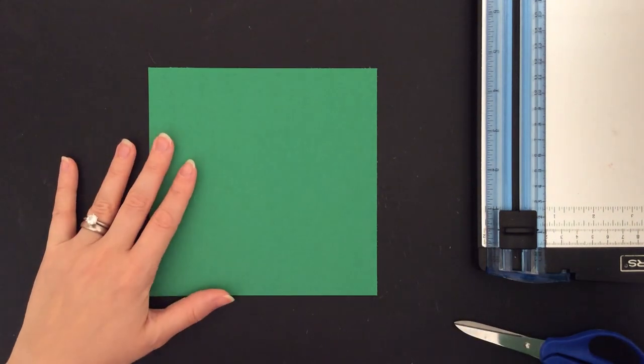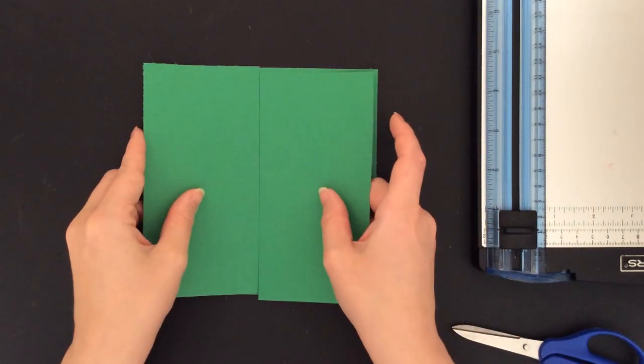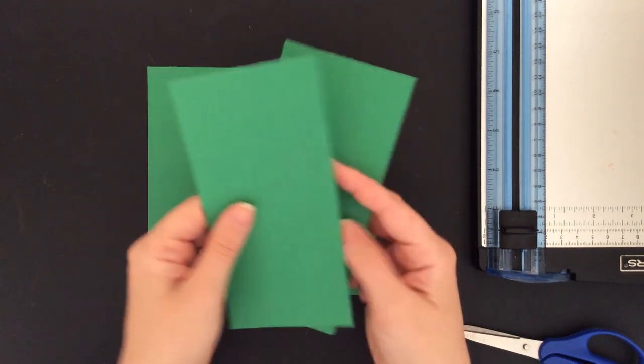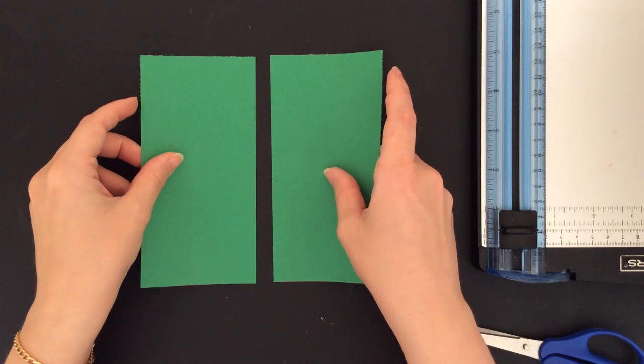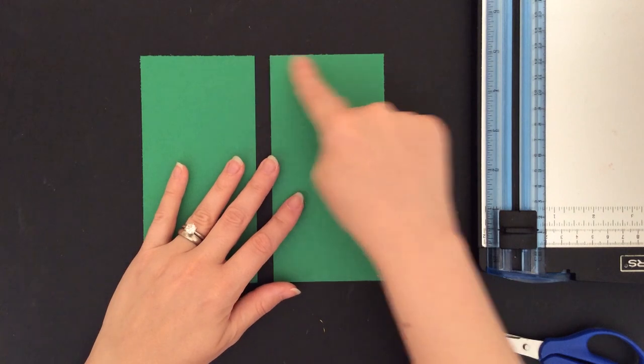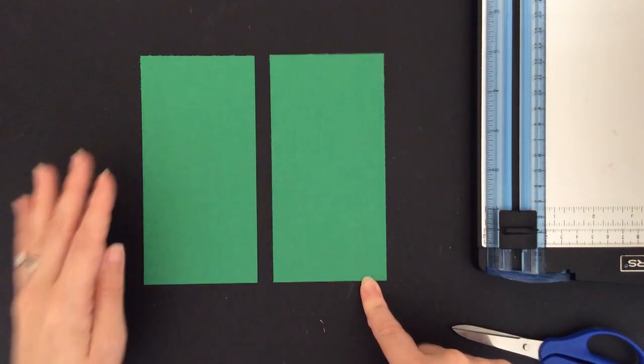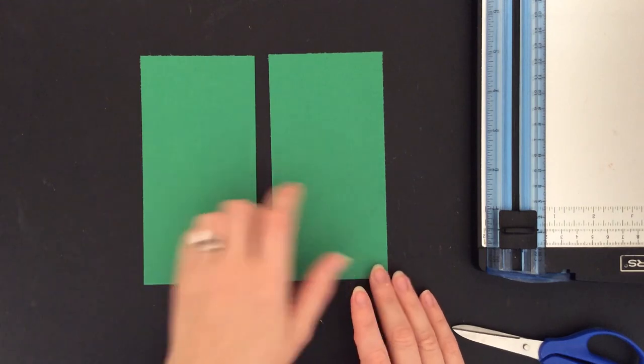Here we go. You're going to start with a 6 inch by 6 inch piece of paper. You're then going to cut that paper in half. So now you've got a 3 inch by 6 inch piece of paper, and another 3 inch by 6 inch piece of paper. First, we're going to start with the bottom, and then we'll make the top.